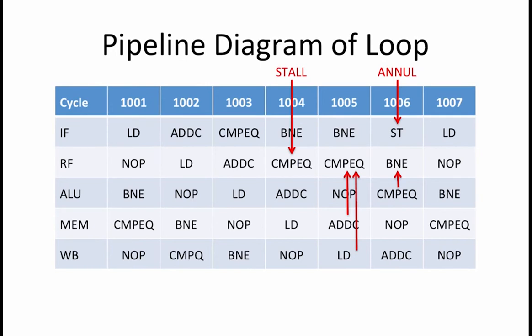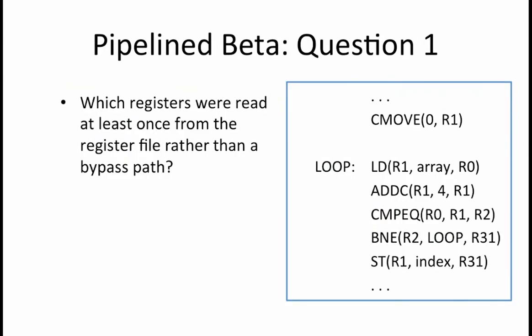We are now ready to answer a few questions about the execution of this loop on our beta. The first question is: which of the registers R0, R1, and/or R2 were read at least once directly from the register file, rather than through a bypass path? Looking back at our completed pipeline diagram, we see that the load and ADDC instructions did not get their operands through bypass paths. Since both of those instructions read R1, that means that register R1 was read at least once directly from the register file. R0, which is only read by the compareEqual, always comes from a bypass path. Similarly, R2, which is only read by the BNE, always comes from a bypass path as well.